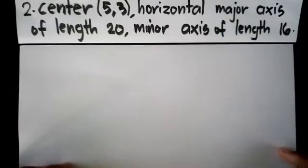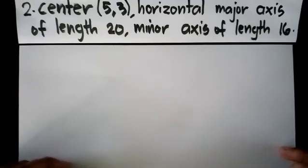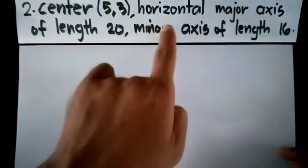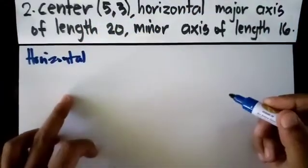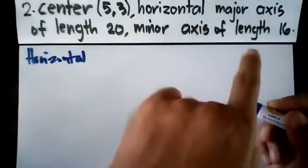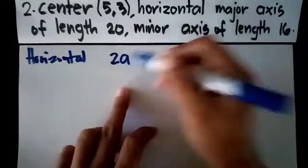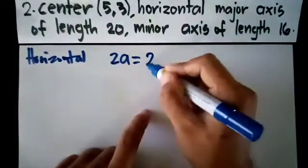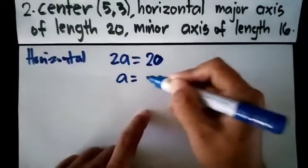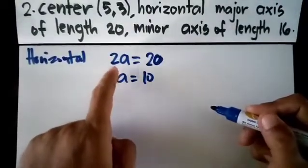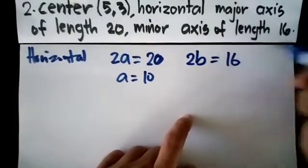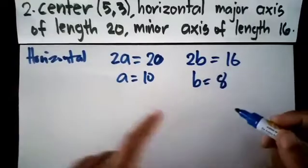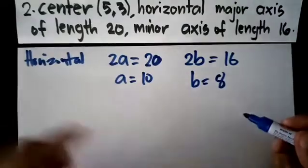Number 2: given is center (5,3), horizontal major axis of length 20, and minor axis of length 16. If the major axis is horizontal, you have an idea that this ellipse is horizontal also. Then the length of the horizontal major axis, if you could recall, is equivalent to 2a. So equate it to 20, so 2a equals 20, so a equals 10 by simply dividing both sides by 2. Then the minor axis, which is 2b, equate it to 16. So b is 8. If you have a, you have b, and you have center, you can now have the equation.